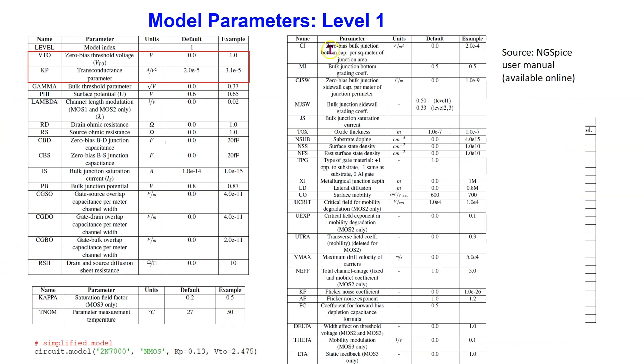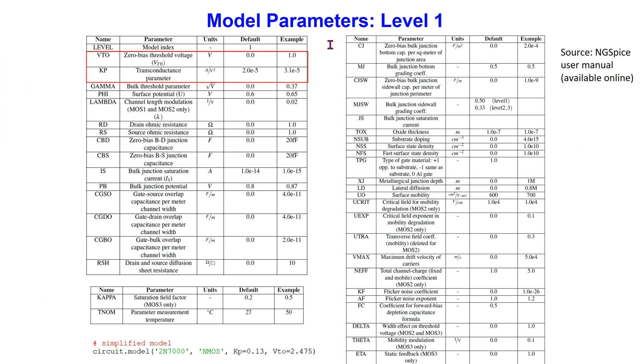The MOSFET Level 1 model has close to 40 parameters in total. The important parameters are: Kp is the transconductance parameter, Vto is the threshold voltage, lambda is the channel length modulation parameter, gamma is the bulk threshold parameter, and phi is the surface potential.